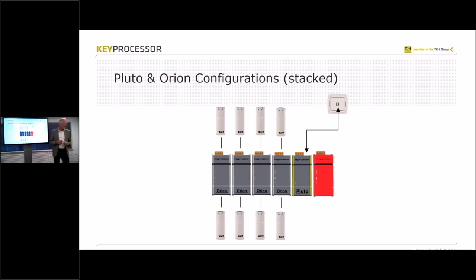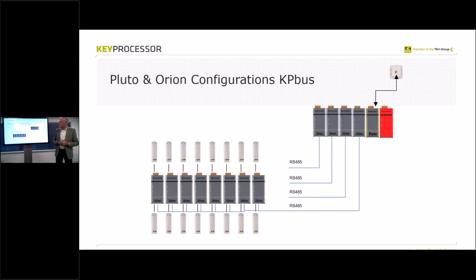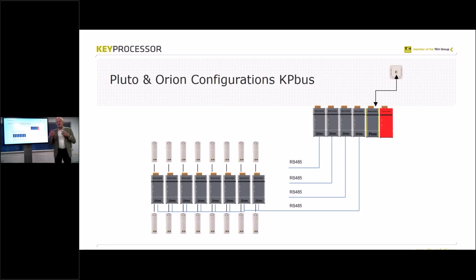That's the first possibility. The second slide shows another possibility: the KP bus line. You still see the readers, the Pluto with four Orions stacked. You can still connect readers directly, but you can also connect an RS485 bus line on each Orion, and connect up to eight Orions per bus, with readers on each Orion. The difference: the first is a stacked RS485 connection; this one uses screw connectors and is Wiegand data output — not RS485 protocol — which is the standard we've used for a few years. Keep this in mind for later.